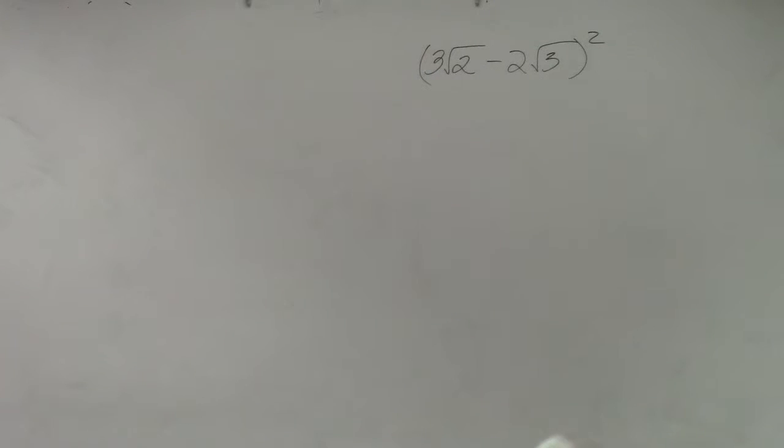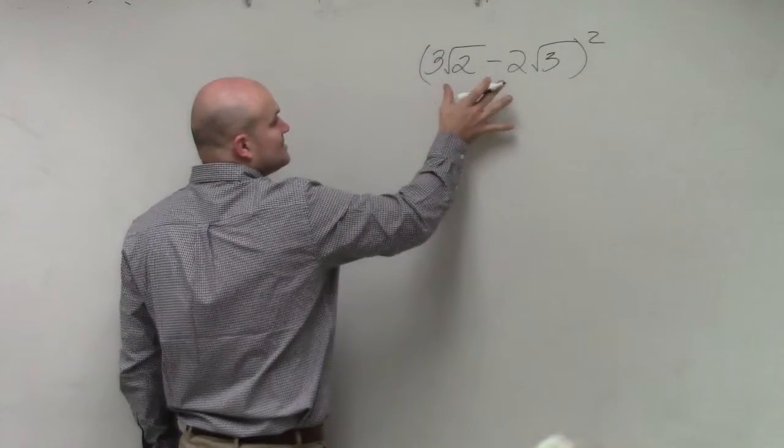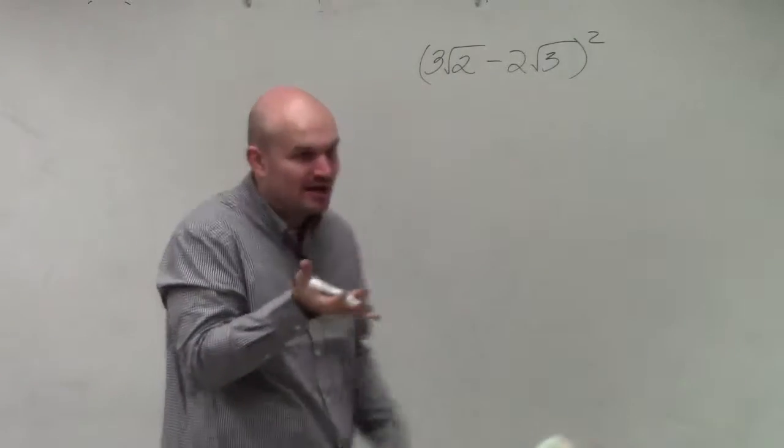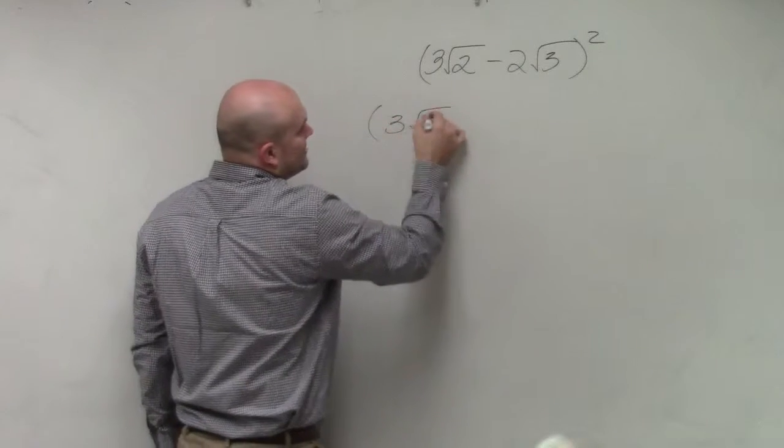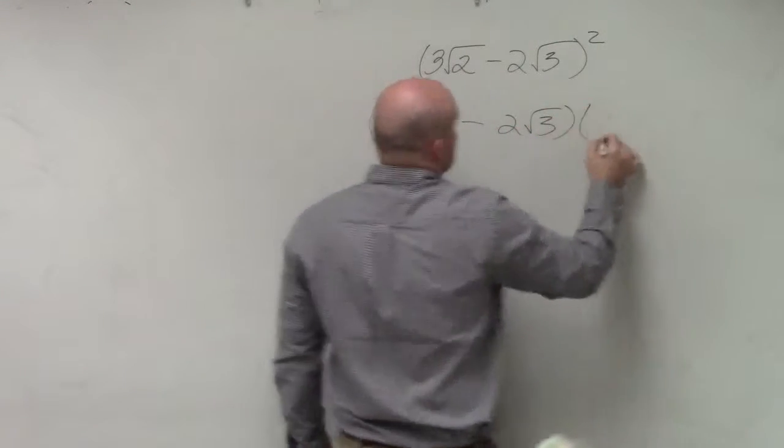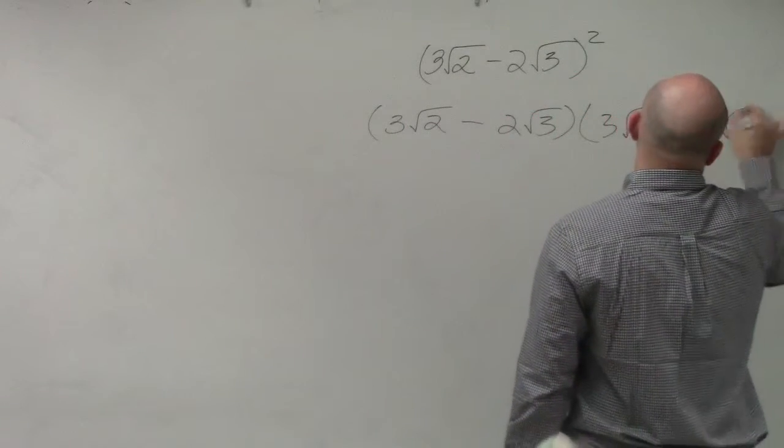Multiplying binomials. When we're multiplying binomials, the main important thing you want to make sure you can do is remember that any time you have anything squared, it's that expression multiplied by itself. So therefore, this is 3 times the square root of 2 minus 2 times the square root of 3, times 3 square root of 2 minus 2 square root of 3.